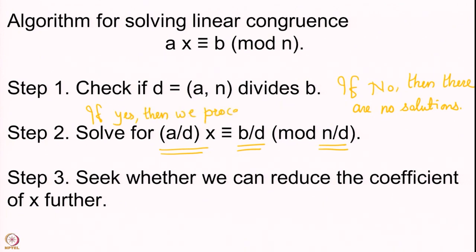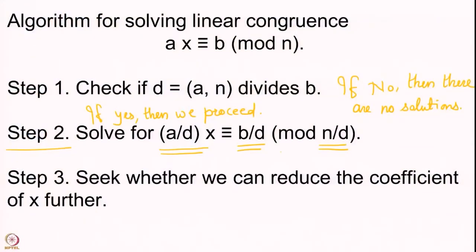Then we come to step 2, which is to solve a/d · x ≡ b/d (mod n/d), the smaller congruence. Having done this, the number of solutions has changed: earlier we had d solutions, but now because GCD(a/d, n/d) = 1, we get a unique solution.